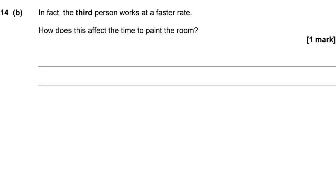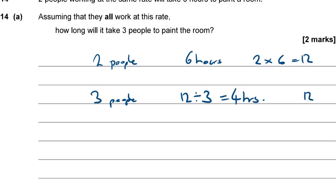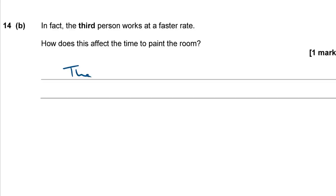Question 14b: In fact the third person works at a faster rate. How does this affect the time? If the third person works faster, it's as though we have more than 3 equivalent workers — say 3.5 effective people. Dividing 12 person-hours by a larger number gives a smaller result. So the time will decrease.